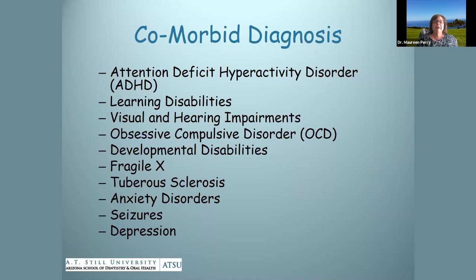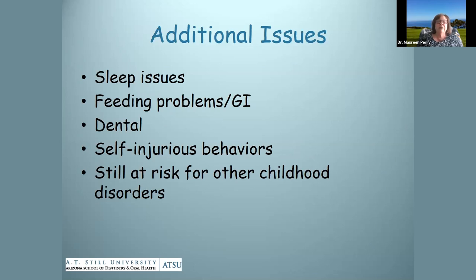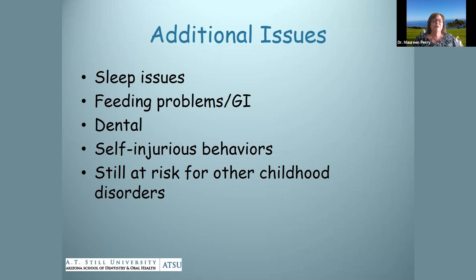Other comorbid diagnoses include ADHD, learning disabilities, visual and hearing impairments, OCD, developmental disability, fragile X, tuberous sclerosis, anxiety, seizures, and depression. Many patients with autism have sleep issues — either trouble sleeping or they don't sleep at all. There are feeding problems and GI issues, which we'll discuss later. They may have dental issues because they don't like the sensory aspects of dentistry — we're really up in people's business with all our tools and things that taste funny. There can also be self-injurious behaviors like skin picking or picking at the gingiva.